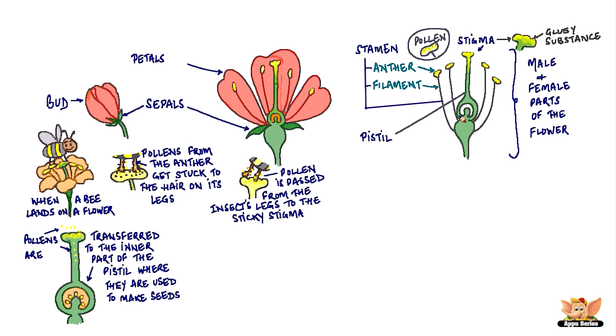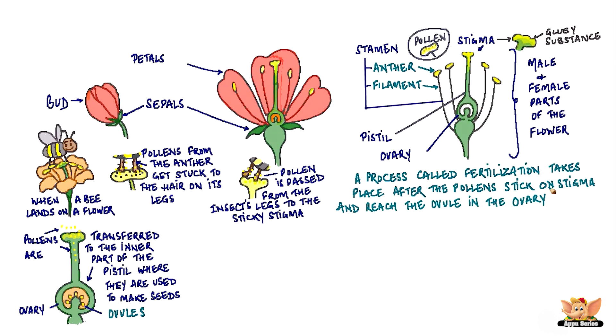See the swollen part at the base of the pistil? This is called the ovary. Now if you carefully cut the ovary in half, you will find tiny bead-like structures. These are called ovules. A process called fertilization takes place after the pollens stick on the stigma and reach the ovule in the ovary.